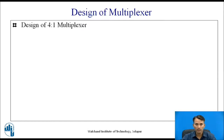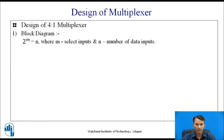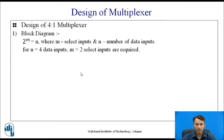Now let us design a multiplexer circuit. For example, we are going to design a 4-to-1 multiplexer. Before drawing a block diagram, we need to know how many inputs there are. From the number of inputs, we can find out the number of select inputs required. According to the equation 2 raised to m equals n, where m is the number of select inputs and n is the number of data inputs, if n equals 4, then m equals 2 select inputs.